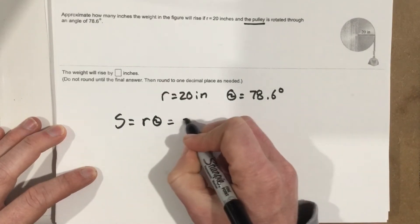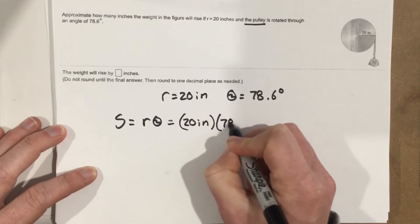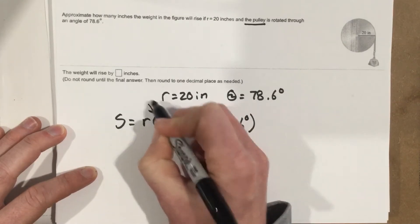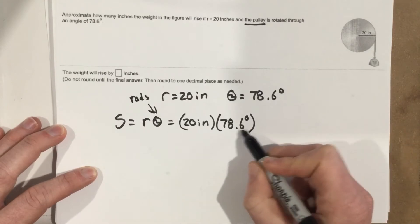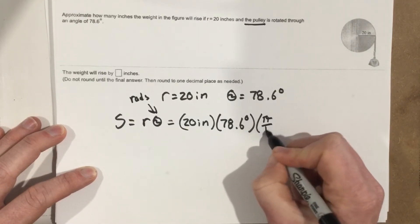So we can go ahead and say that this is 20 inches times 78.6 degrees, and one thing I have to remember is that this has to be in radians, theta does. So it's in degrees right now, I need to convert that by multiplying by pi over 180 degrees.